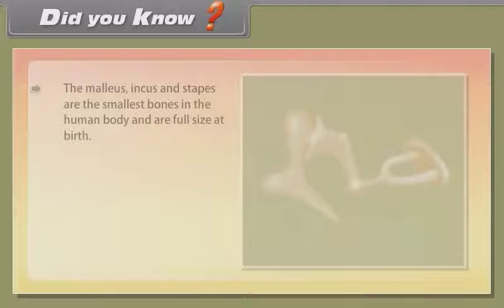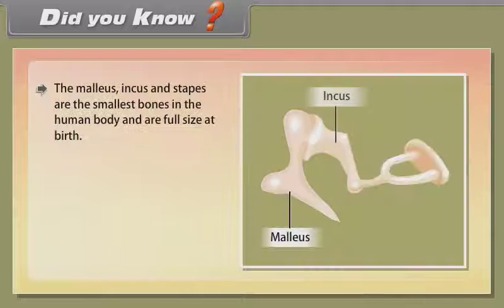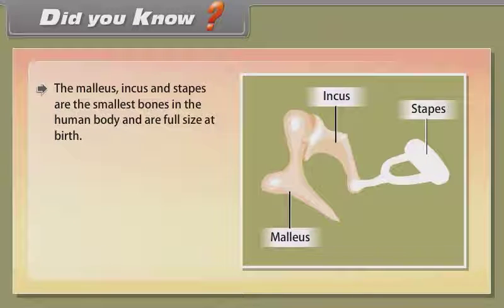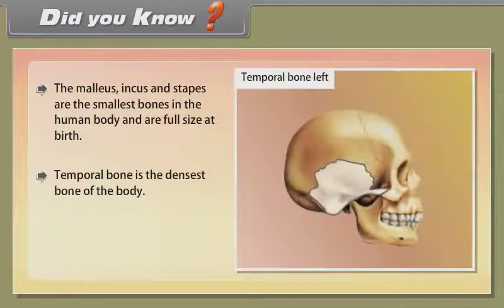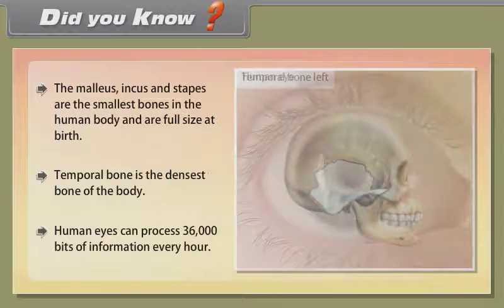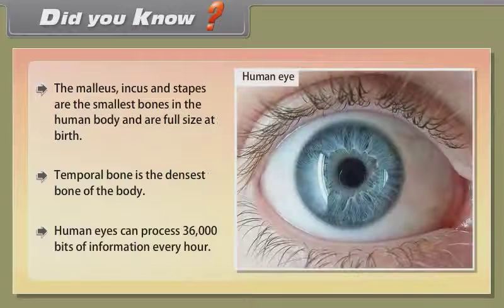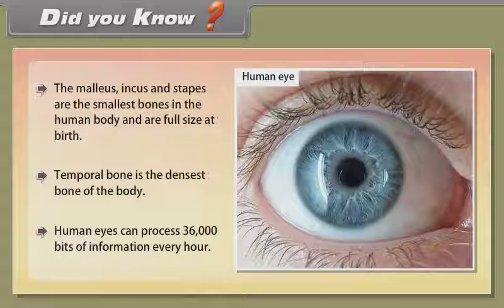Did you know? The malleus, incus and stapes are the smallest bones in the human body and are full size at birth. The temporal bone is the densest bone of the body. Human eyes can process 36,000 bits of information every hour.